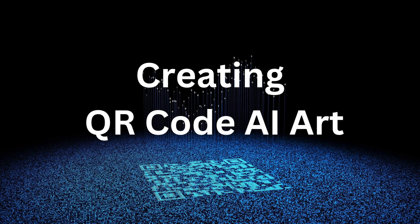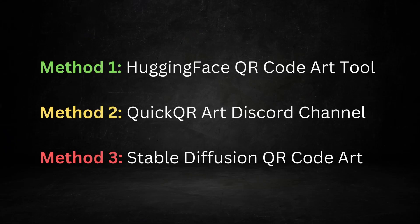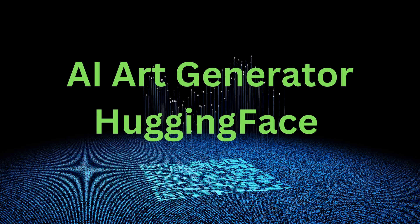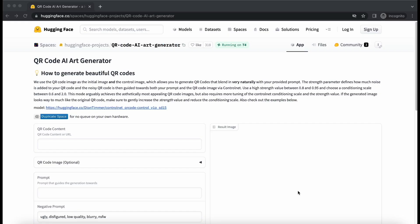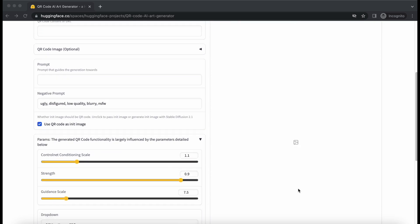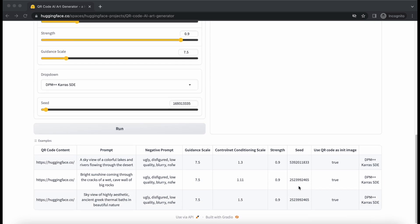Let's now explore three different approaches to generate AI art from QR codes, starting from the easiest and gradually moving towards more advanced methods. The first method we are going to use is a free tool available on the Hugging Face website. This method is quite simple and doesn't require any setup. Just keep in mind that to achieve stunning art quality you need to be patient and experiment with the parameter values. Let's visit the QR code AI art generator tool page on Hugging Face. You can get the site URL from the video description.